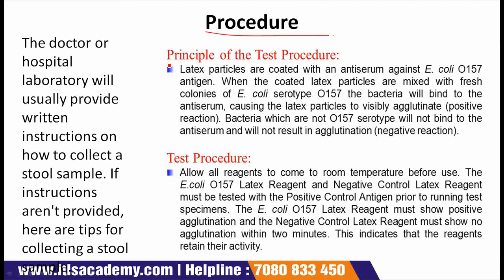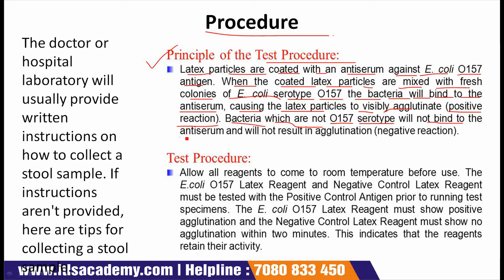Procedure. Principle of the test procedure: latex particles are coated with an antiserum against E. coli O157 antigen. When the coated latex particles are mixed with fresh colonies of E. coli O-type O157, the bacteria will bind to the antiserum, causing the latex particles to visibly agglutinate — that is a positive reaction. Bacteria which are not O157 serotype will not bind to the antiserum and will not result in agglutination — a negative reaction.